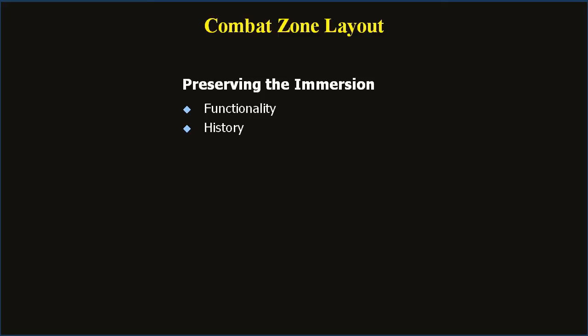Nothing breaks the illusion more than enemies mindlessly patrolling predictable loops or just standing around idling waiting to be killed. What is their role? What should they be doing when you enter the area? If they just arrived, are they setting up base or unloading? If they've been there a while, what do they do to pass the time? Justifying everything creates a believable environment that simply isn't a random assembly of objects strictly serving the purpose of creating a better combat zone.